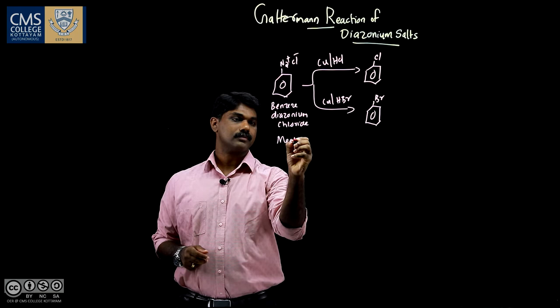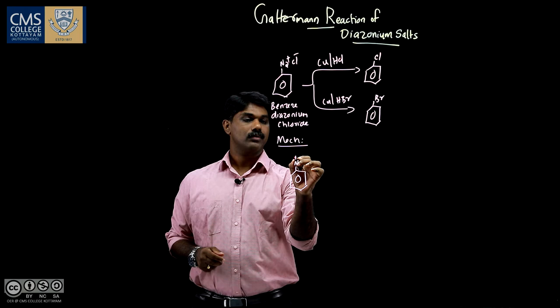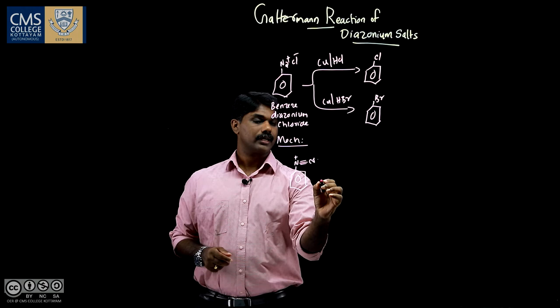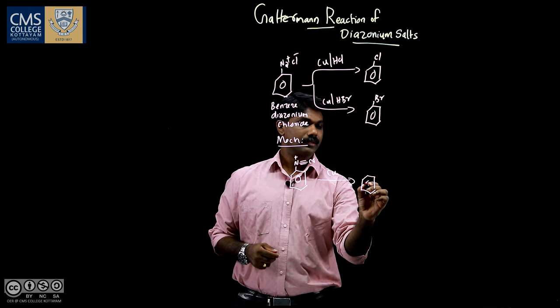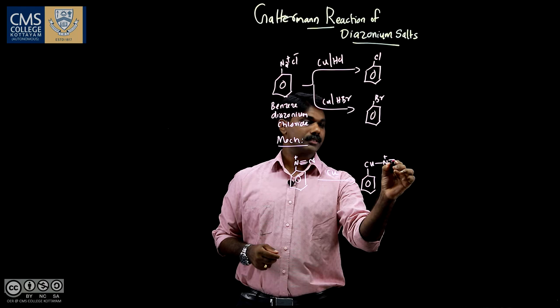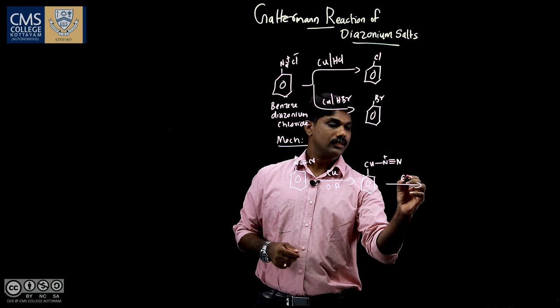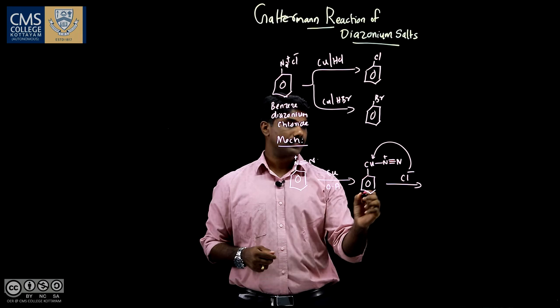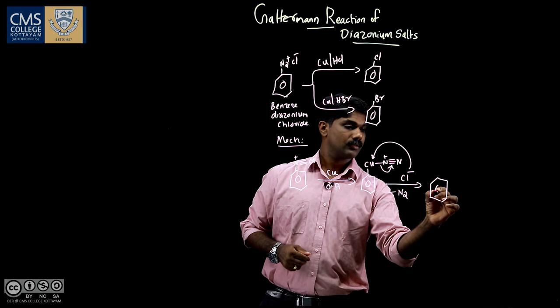In the first step, N+ triple bond N, this copper powder gets inserted in between the nitrogen and the phenyl ring and we get Cu then N+ triple bond N. This is oxidative addition reaction, and then attack by Cl-. Cl- attacks here and the strong leaving group N2 gets eliminated and we get CuCl.